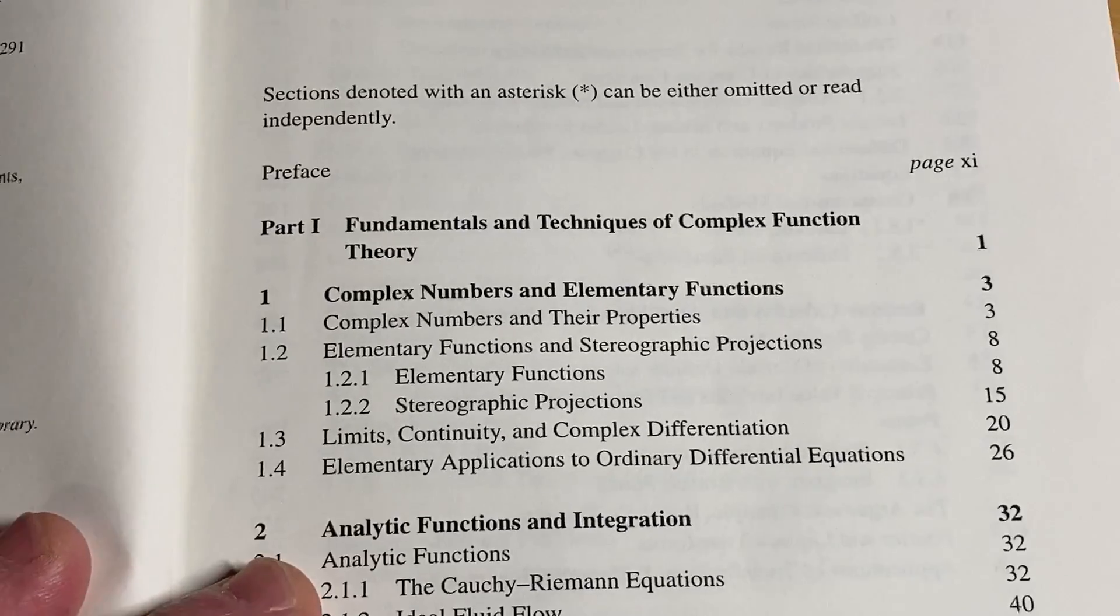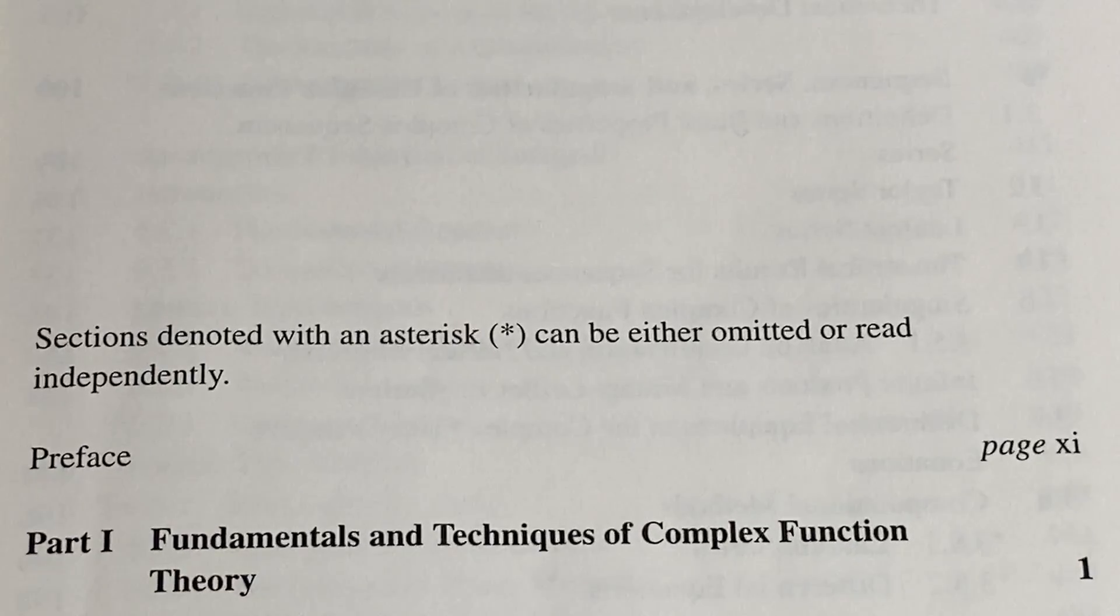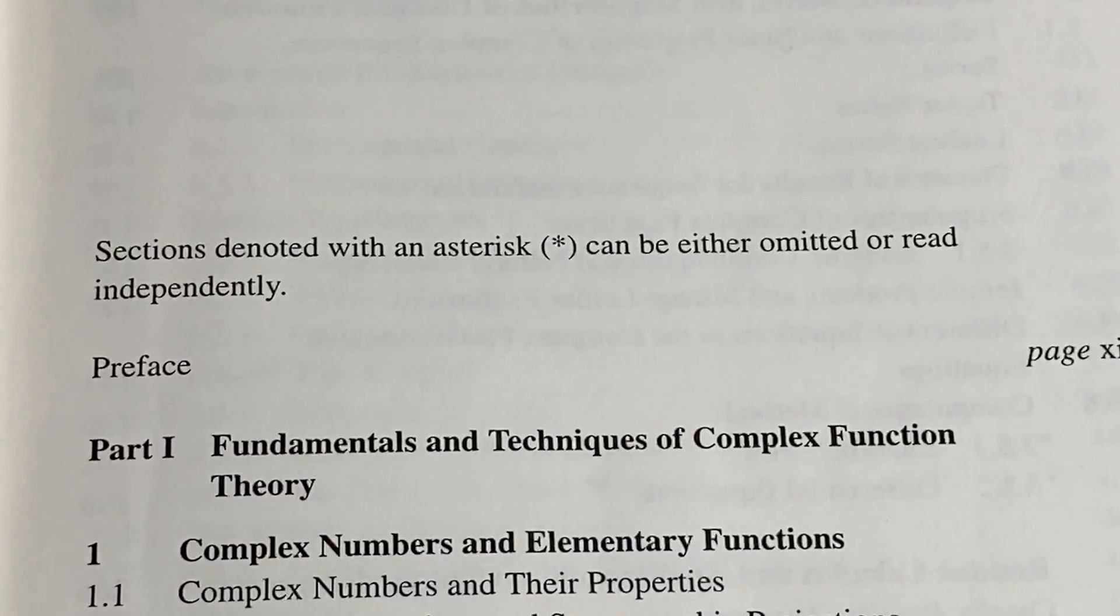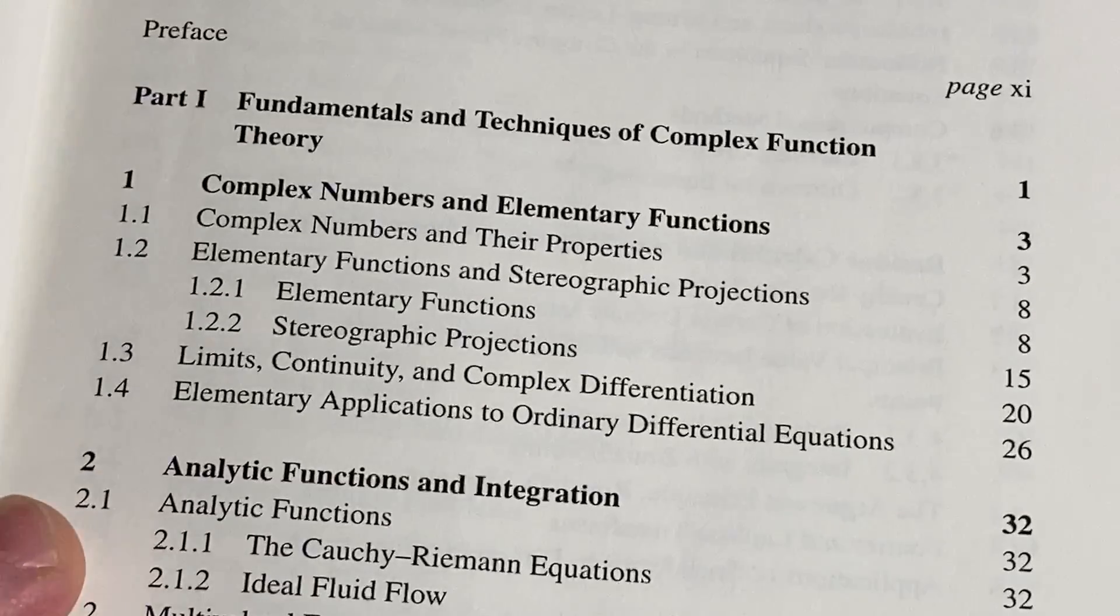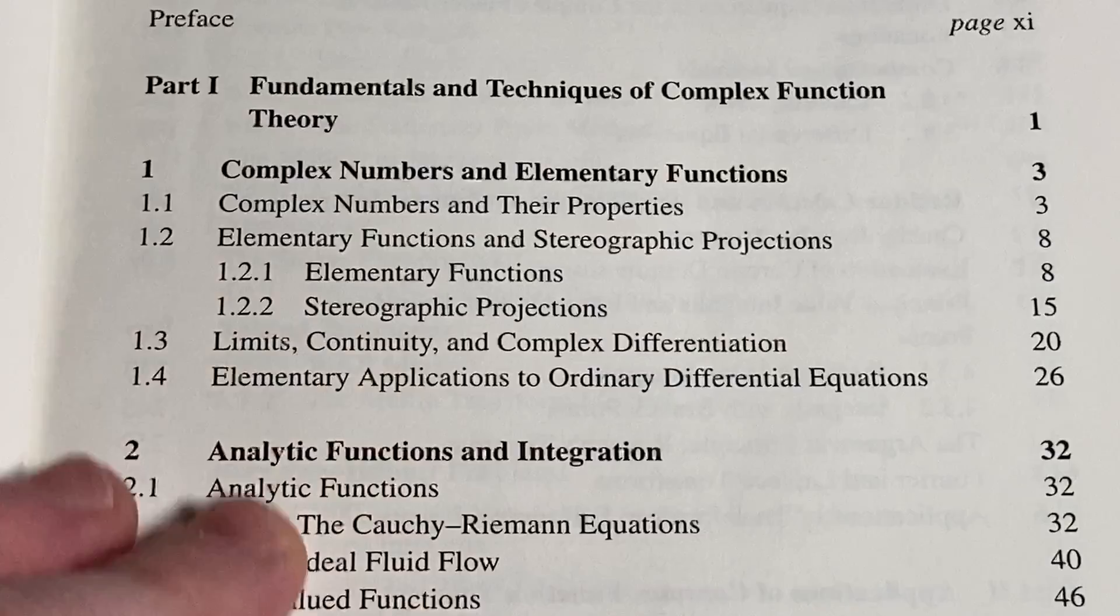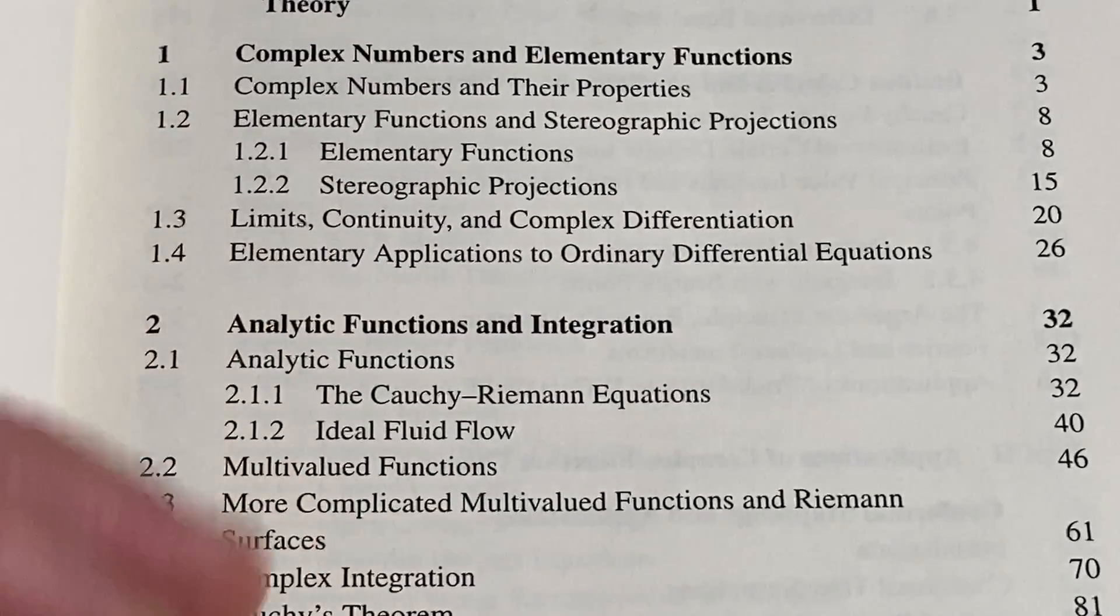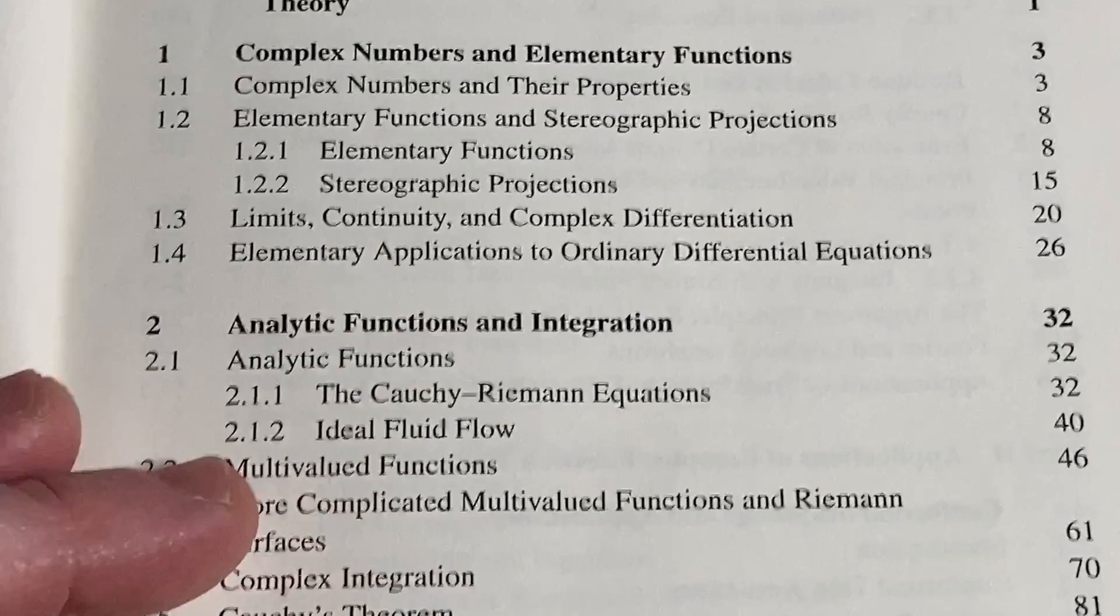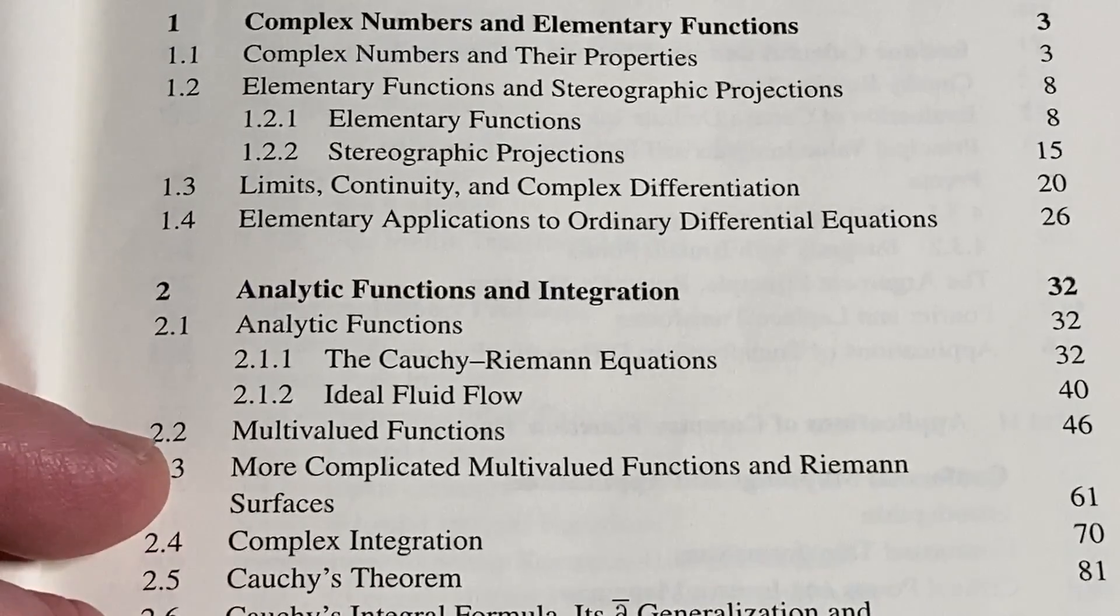Here's a look at the topics. It says sections denoted with an asterisk can be either omitted or read independently. It starts with the basic stuff: complex numbers. This is really basic. Limits, continuity. You need to know some calculus ideally before you jump into this. Once you know some calculus, you can jump in. You'll probably get hung up on the proofs unless you're really good at writing proofs or have some proof knowledge.